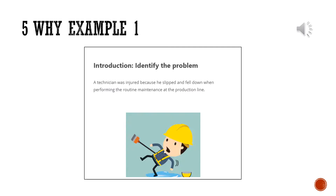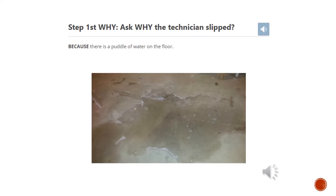Let's look at a 5Y example. We start with a simple case to find the root cause. The problem: a technician was injured because he slipped and fell down when performing routine maintenance at the production line. We ask our first why — why did the technician slip? Based on inspection and analysis of the area, we found that the technician slipped because there was a puddle of water on the floor.